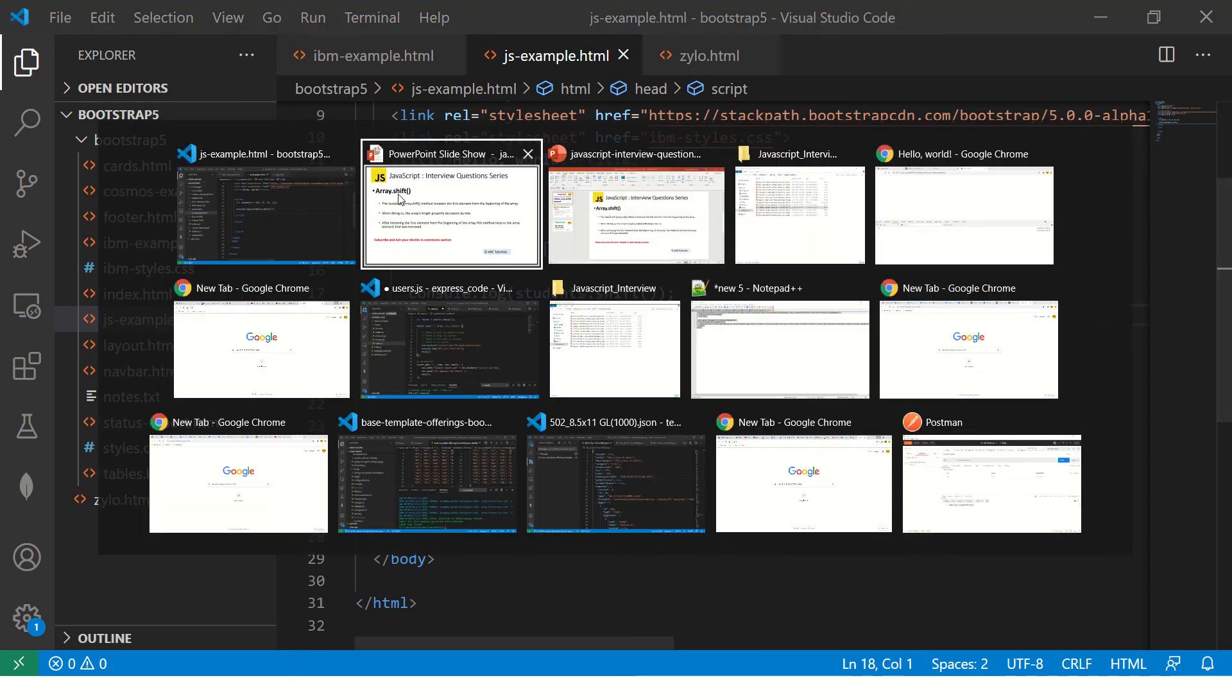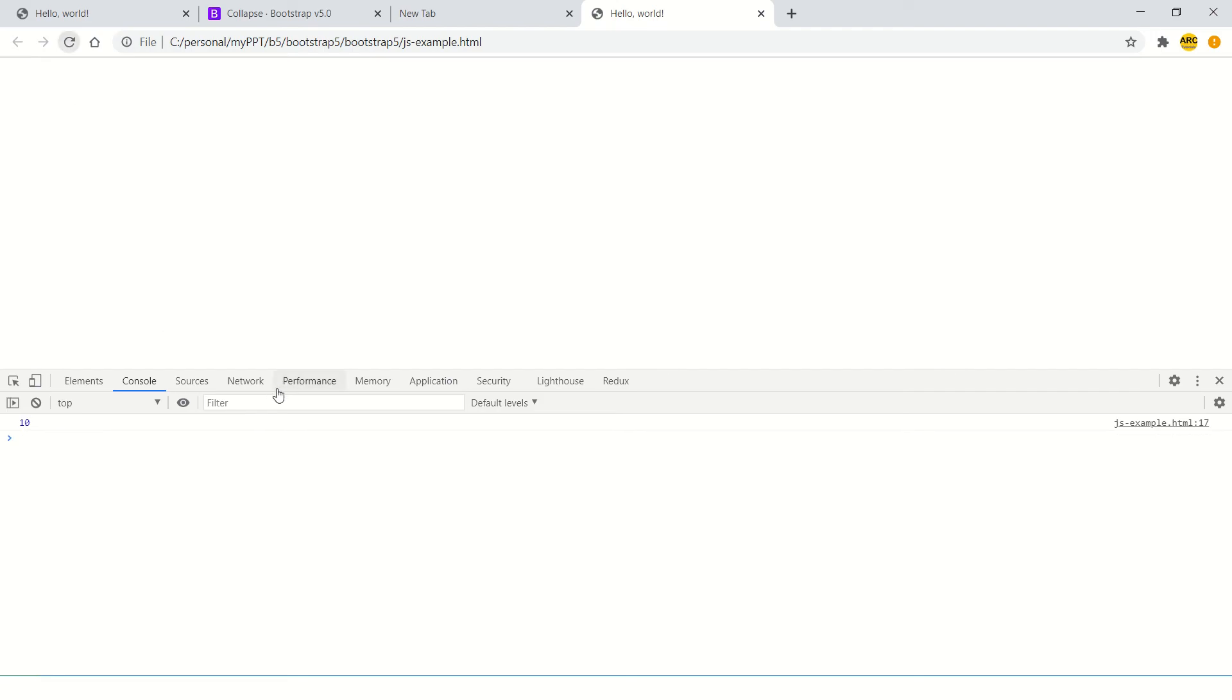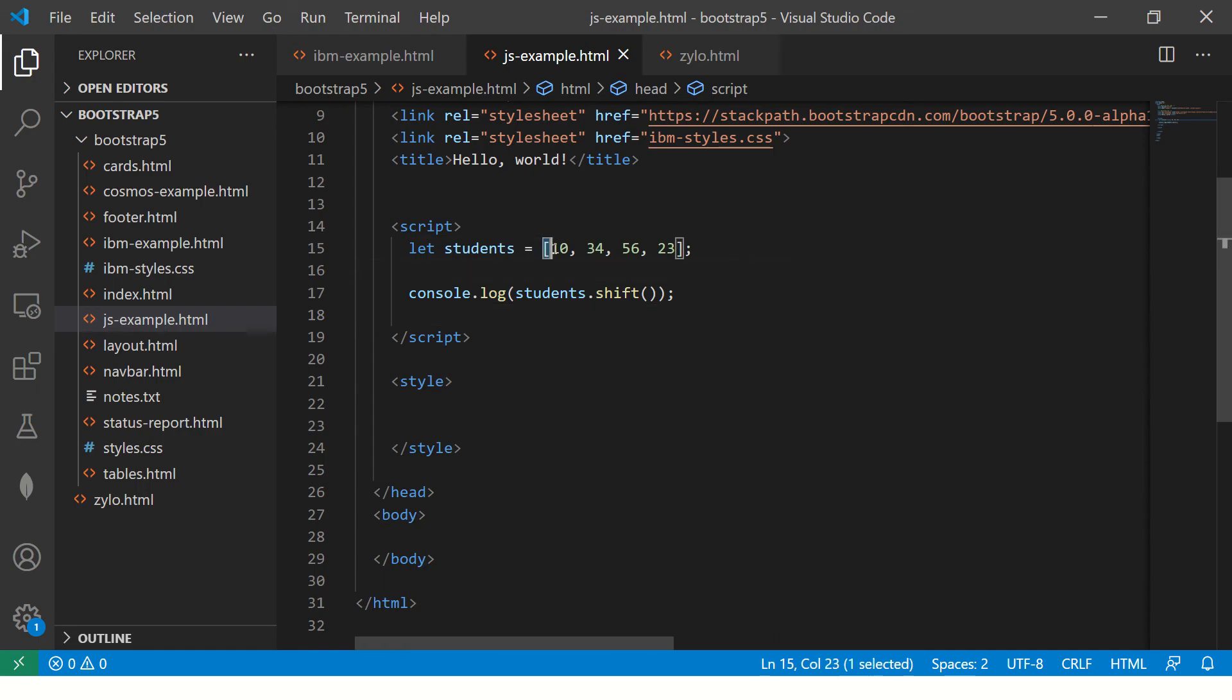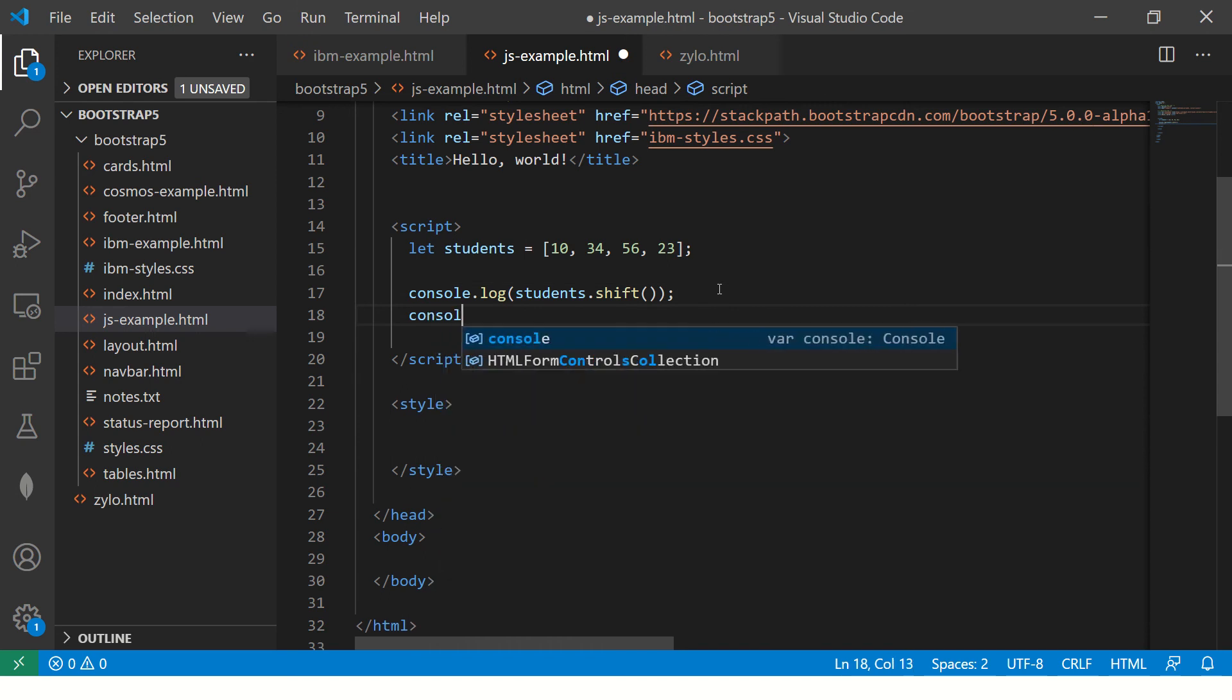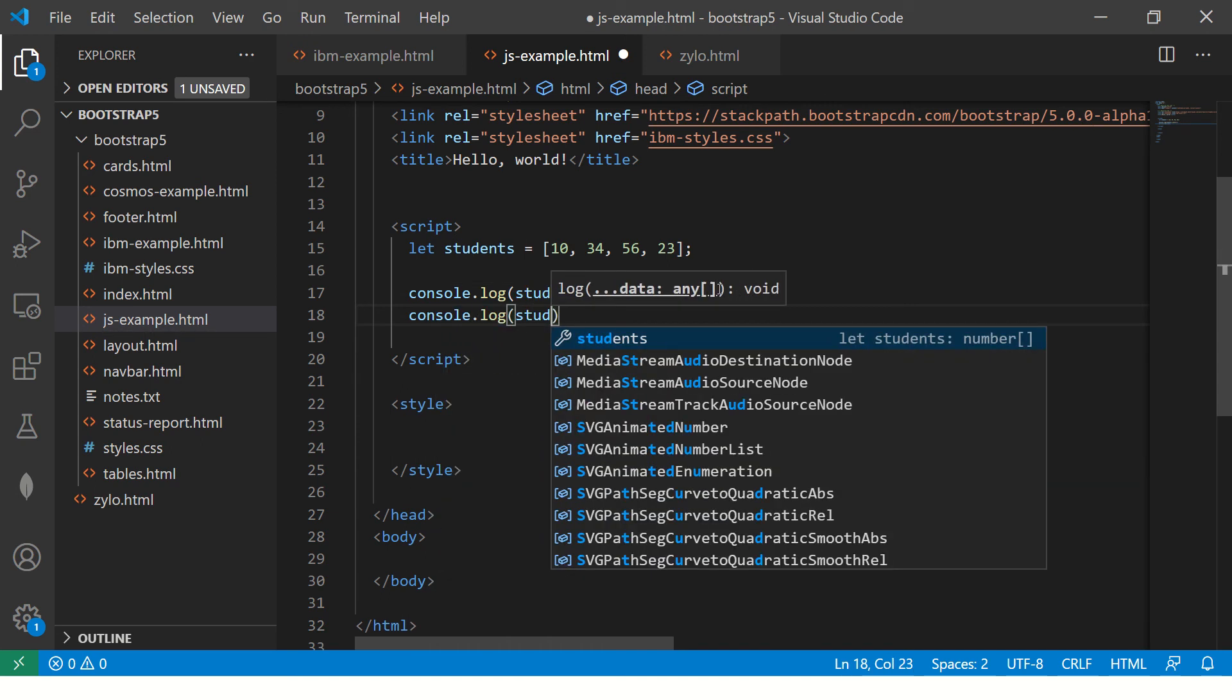So when you do this it should give us 10. Let's see that. So you see 10 because it removed the first element at the beginning of the array. Now similarly, when you do console.log students.pop